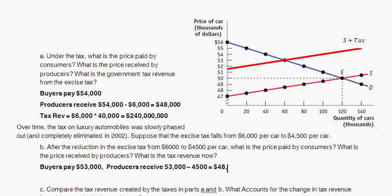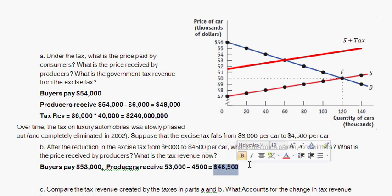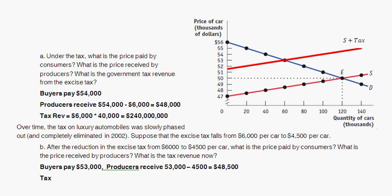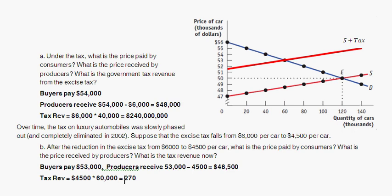Producers get paid by buyers but must pay the tax, so they receive $48,500 in the end. For the new tax revenue, we use the same process: $4,500 tax rate times the new quantity sold of 60,000 cars equals a total tax revenue of $270 million. It's simply the excise tax times the quantity of cars sold.